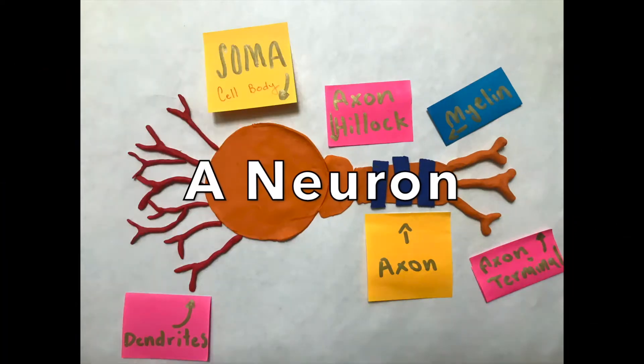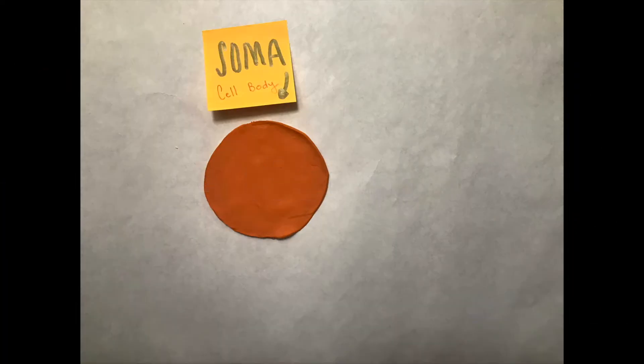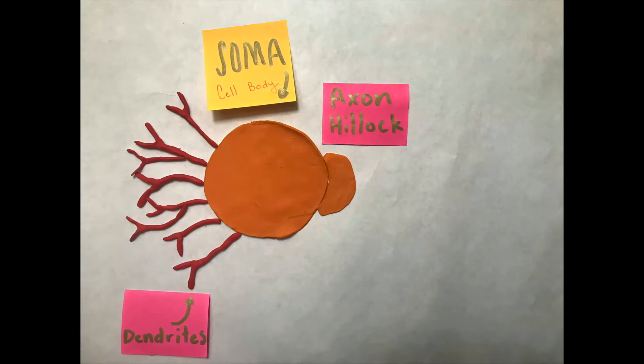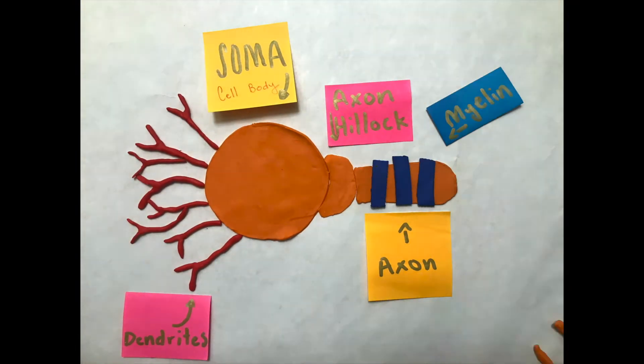A neuron consists of multiple parts: the soma or cell body, dendrites, the axon hillock, the axon myelin, and axon terminals.